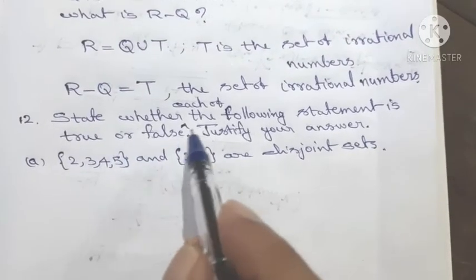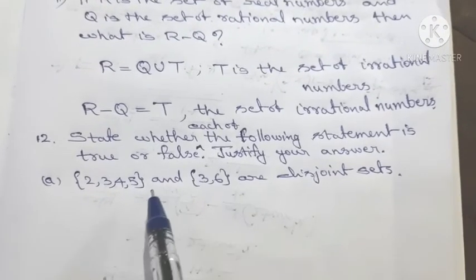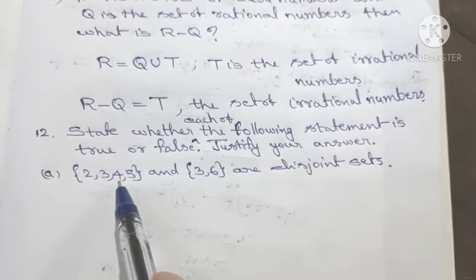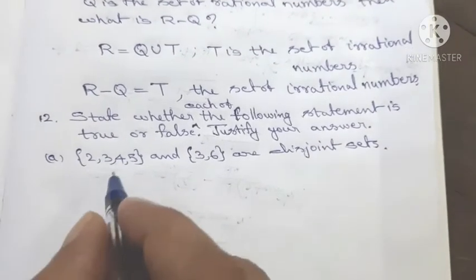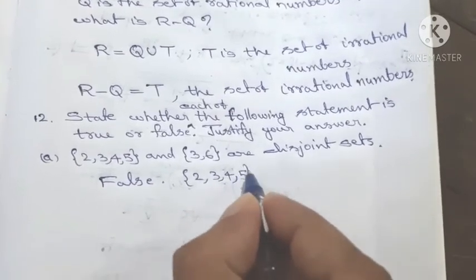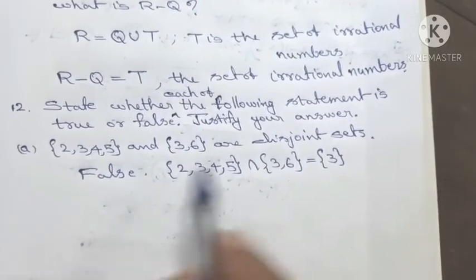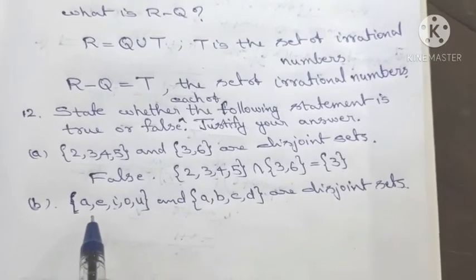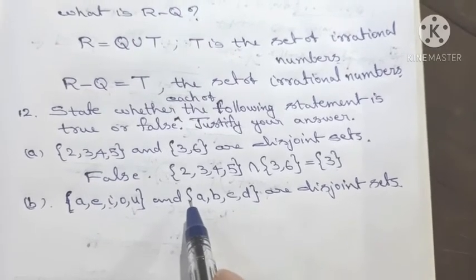Question 12: State whether each of the following statements is true or false and justify your answer. Statement: The sets {2, 3, 4, 5} and {3, 6} are disjoint sets. Their intersection equals the singleton set {3}, meaning they share a common element. Therefore this statement is false.